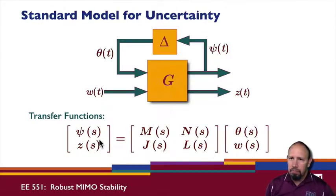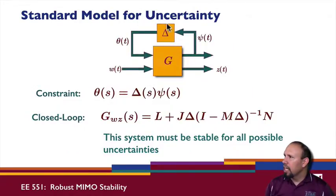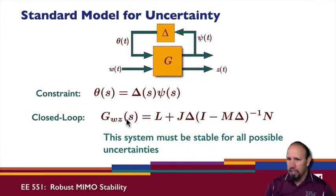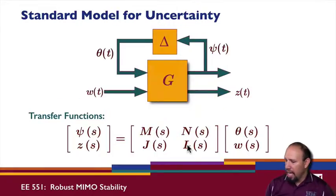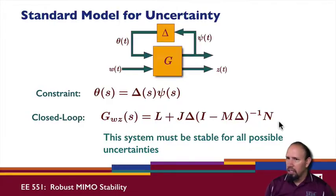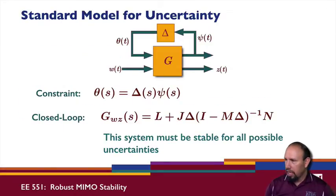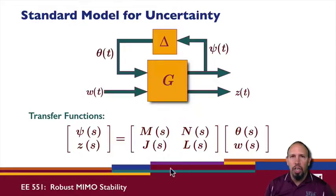With the constraint that θ equals Δ times c, we get the closed-loop transfer function. Once we've closed the loop, the transfer function from w to z is given by this expression, and this system must be stable for all uncertainties. We notice transfer functions M, N, J, and L form this closed-loop transfer function. We assume that J, L, M, N, and Δ are all stable — meaning we've applied a controller that stabilized the system, so these transfer functions include the controller.